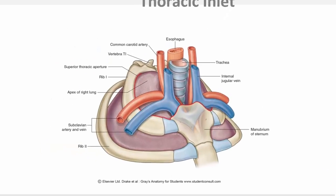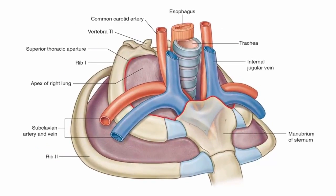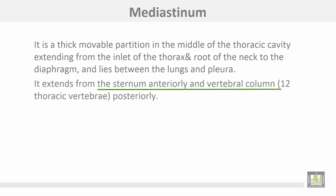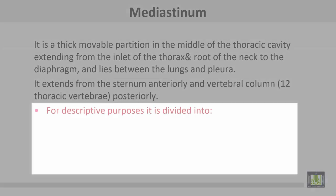The thoracic inlet contains structures entering or leaving the thoracic cavity to the root of the neck. The mediastinum is formed by a movable partition in the middle of the thoracic cavity, extending from the inlet of the thorax and root of the neck to the diaphragm. It lies between the lungs and pleura, extending from the sternum anteriorly to the thoracic vertebrae posteriorly.